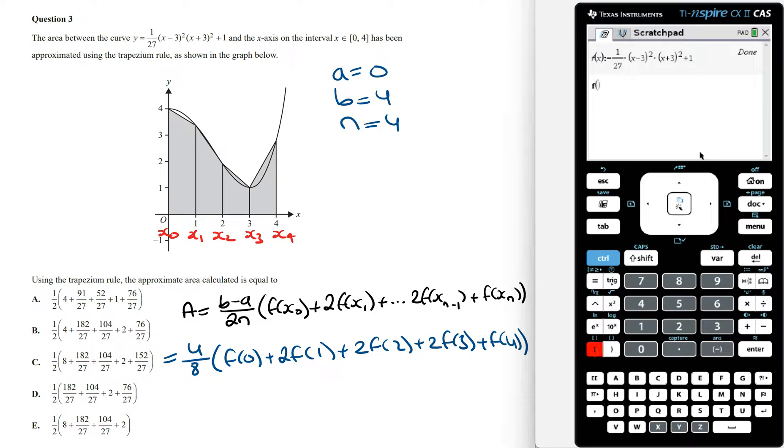Now the fastest way to do this is to say f of x, and then given that x is equal to, and then curly brackets, it's 0, 1, 2, 3, and 4, all separated by a comma.